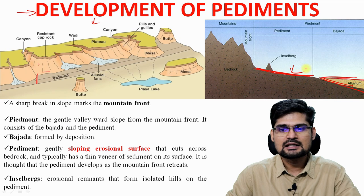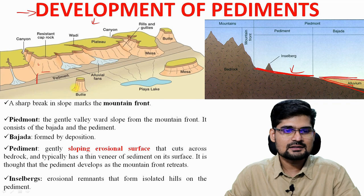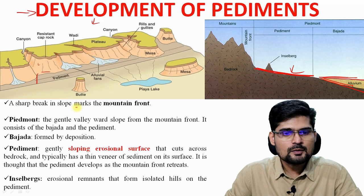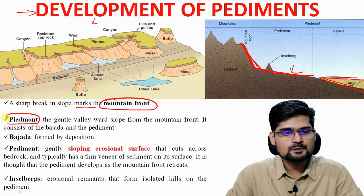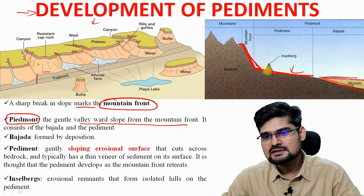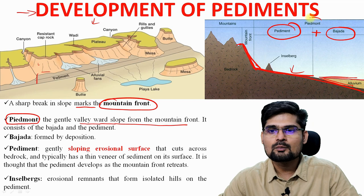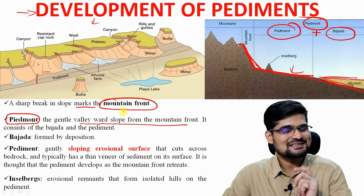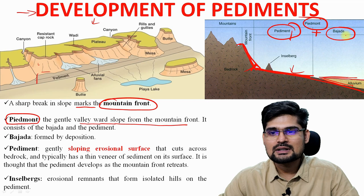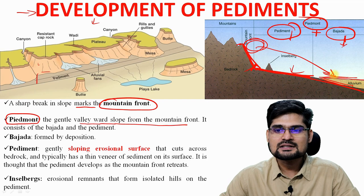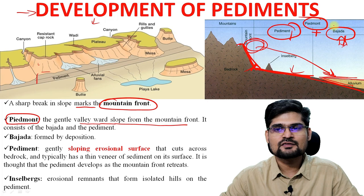If you observe different terminologies here that are important to remember: a sharp break in the slope marks the mountain front. And piedmont — another word here — this is a gentle valley-ward slope from the mountain front. So pediments as well as bajadas together form piedmonts. When we say piedmont and when we say pediment there is a difference. Pediment is only the first part of this erosional surface — a platform at the just foothills. But piedmont includes these pediments as well as the depositional features — the big boulders and other material — that is called bajadas. So piedmont equals pediments plus bajadas.